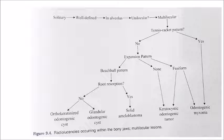Multilocular lesions: the most common pattern is the tennis racket pattern, which is surely a case of odontogenic myxoma. If not a tennis racket pattern but an expansion pattern with root resorption of the tooth, it will be an ameloblastoma. If it shows expansion without causing root resorption, it will be either an orthokeratinized odontogenic cyst or a glandular odontogenic cyst.